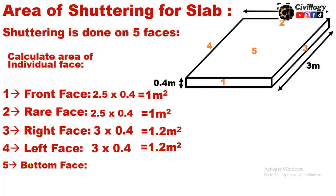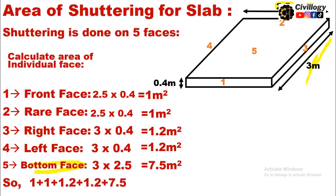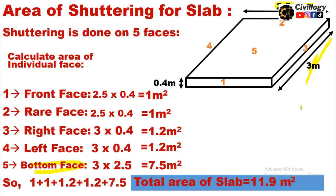For the bottom face of the slab, the length is 3 meters and the width is 2.5 meters. The entire bottom of the slab is covered with formwork or shuttering, so the area is 3 × 2.5 = 7.5 square meters. By adding up all these values, we get the total shuttering area required for the slab: 11.9 square meters.